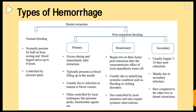Primary hemorrhage occurs during and immediately after extraction. Typically the patient presents with blood filling the mouth, usually due to infection or traumatized blood vessels, and it is often controlled by local techniques such as pressure packs and hemostatic agents. Reactionary hemorrhage begins two to three hours post-extraction, after the vasoconstrictive effect of the local anesthetic has worn off.